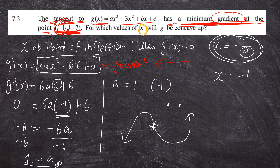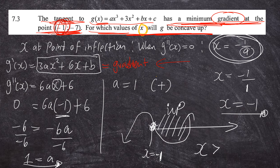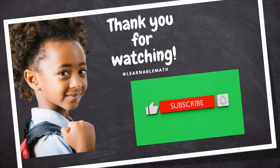Substituting a = 1 into x = -1/a gives x = -1. So the point of inflection is at x = -1. To answer the question — for which values of x will g be concave up — since a is positive and the graph ends with a smile, the function is concave up when x is greater than -1, as we are moving forward past the point of inflection. So the answer is x > -1.